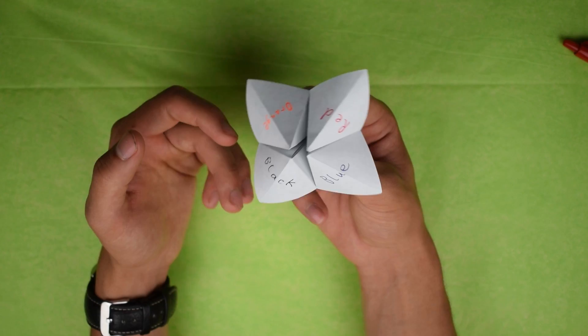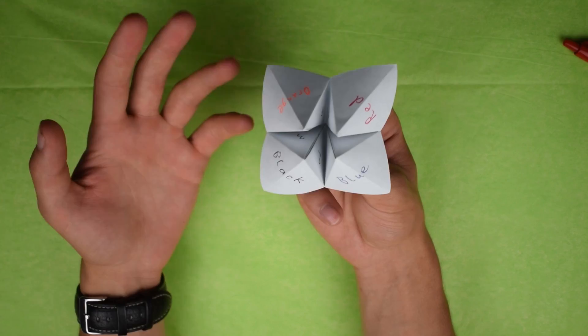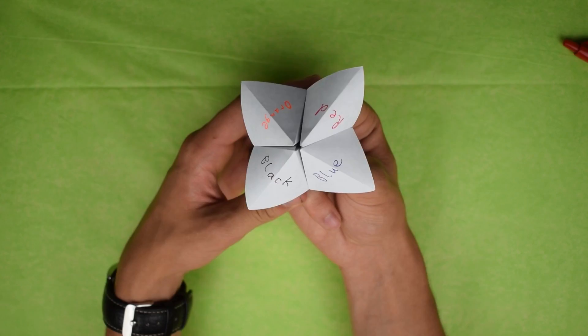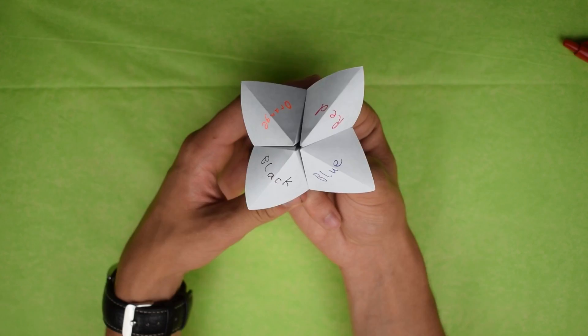So anyway, that's how to make the origami fortune teller the way I learned it. There's a billion ways out there. And get creative. Make your own. Let me know in the comment section your ideas for how to make a better origami fortune teller. I'd love to hear from you. Also, if you have any ideas for any future videos, go ahead and let me know in the comments as well.